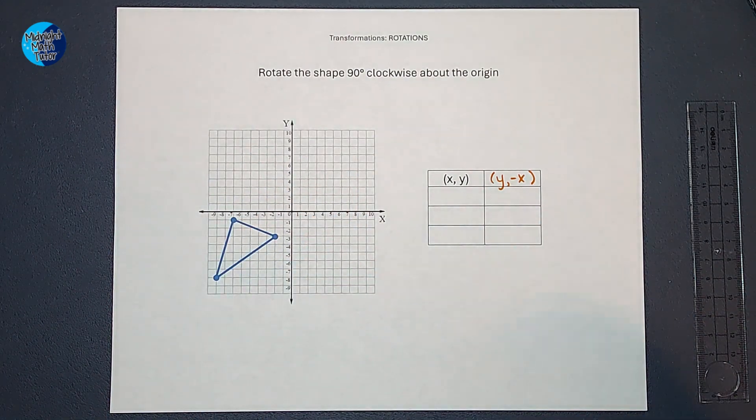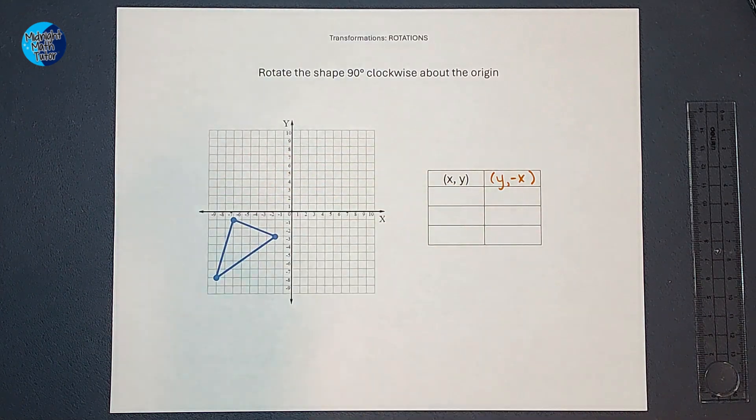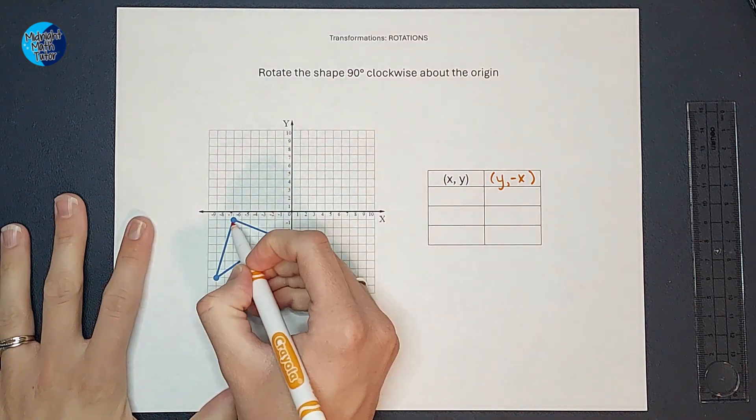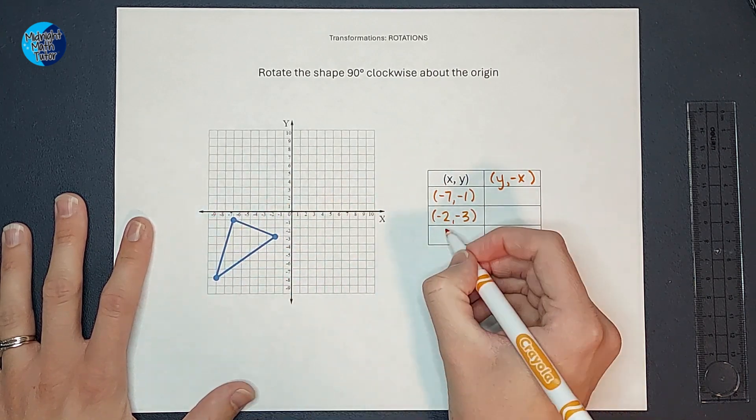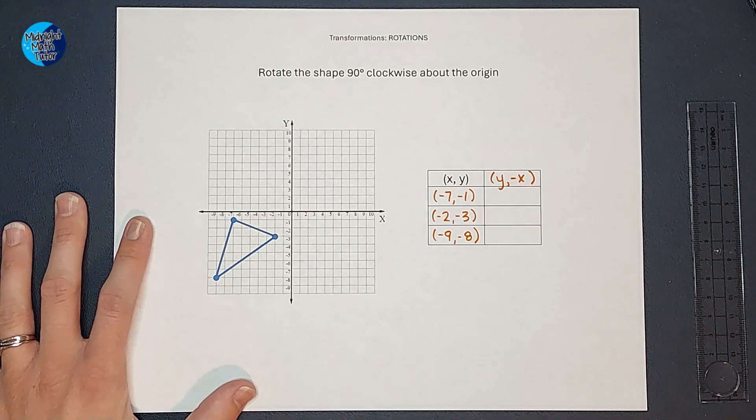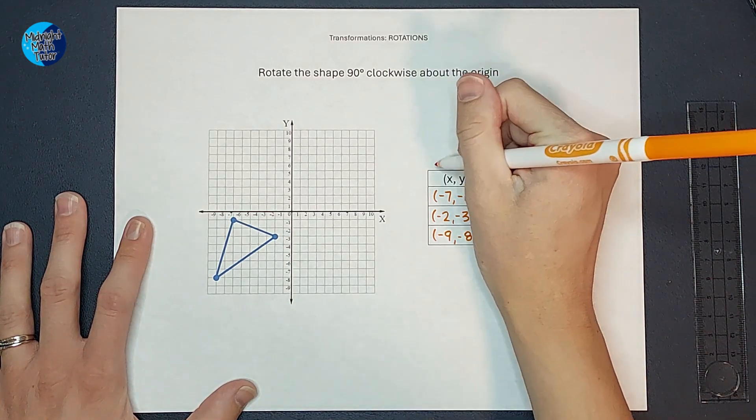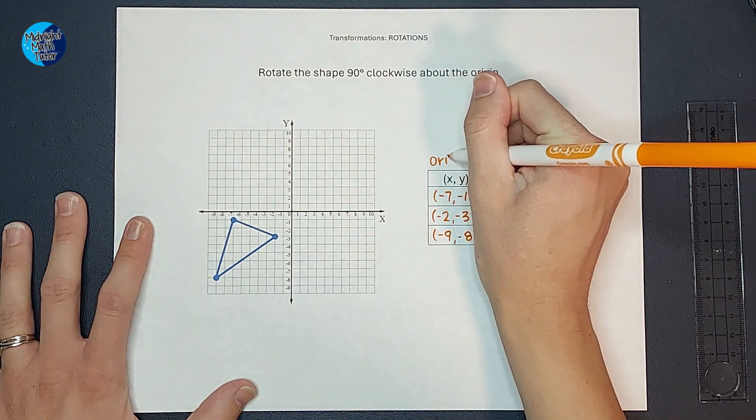So the first thing I'm going to do is figure out what all of these points are. Okay, so those are all the points on my original triangle.